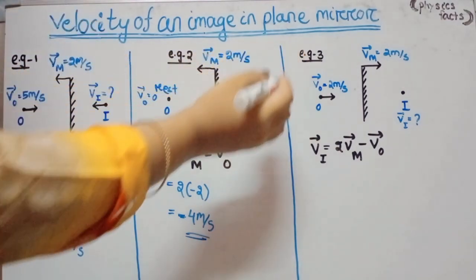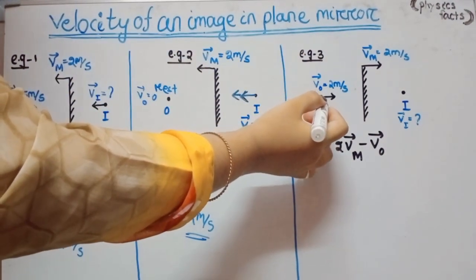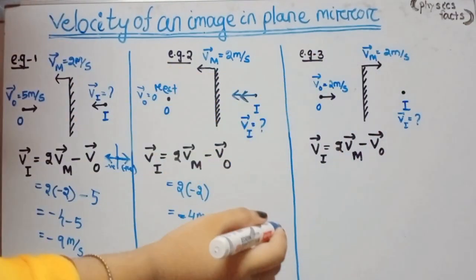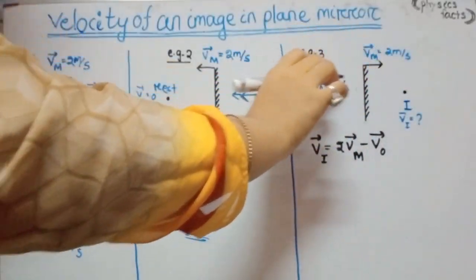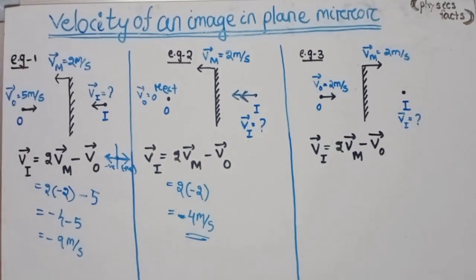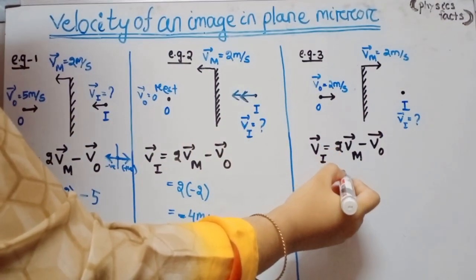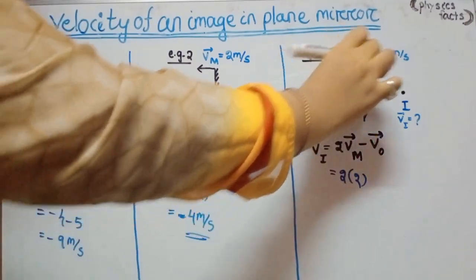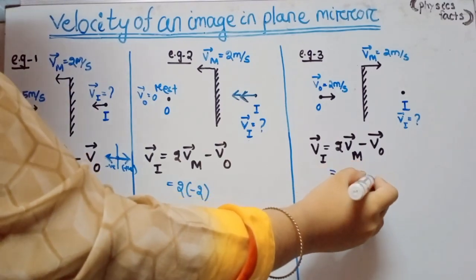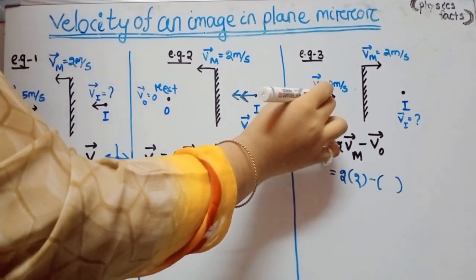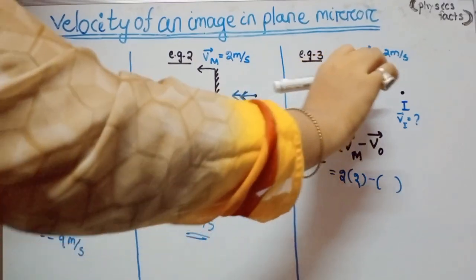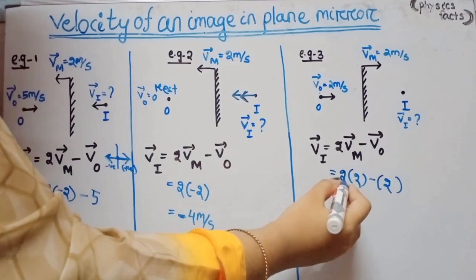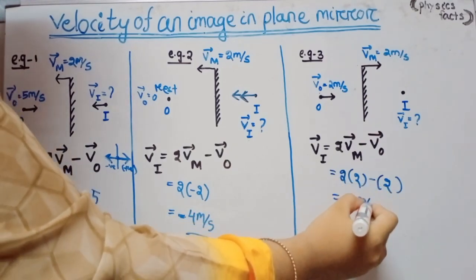Example 3: Object moves at 2 m/s and mirror moves at 2 m/s, both in the positive direction. Vi = 2(+2) - (+2) = 4 - 2 = 2 m/s. The velocity of the image is 2 m/s.